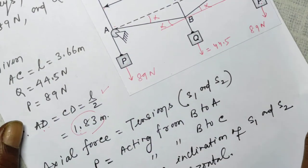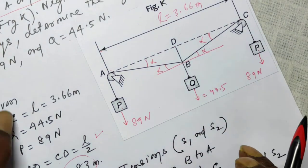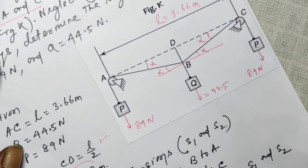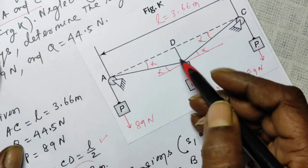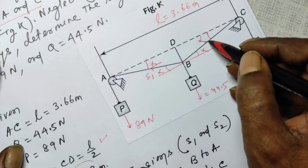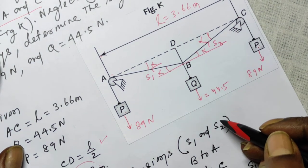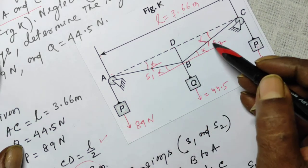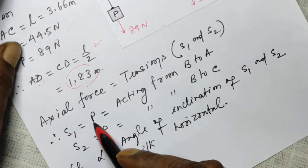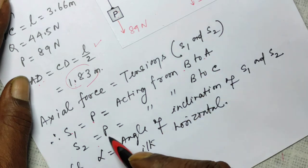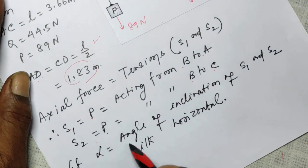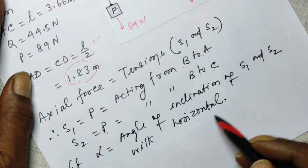Since ABC is a string or chord, there will be tension forces. The axial force will be the tension force. For this part, let the tension force be S1 away from point B, and to the other side let it be S2 away from point B. S1 and S2 are equal because the two weights are equal, so S1 = P acting from B to A, and S2 = P acting from B to C. Let alpha be the angle of inclination of S1 and S2 with the horizontal.